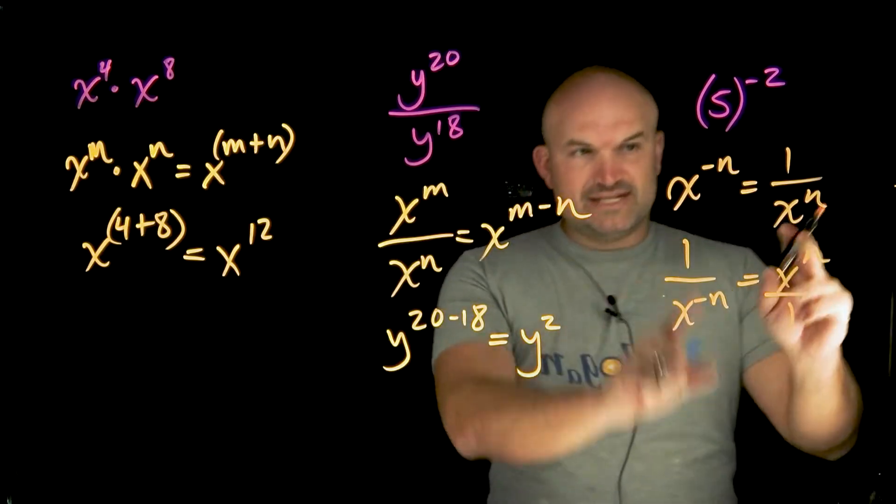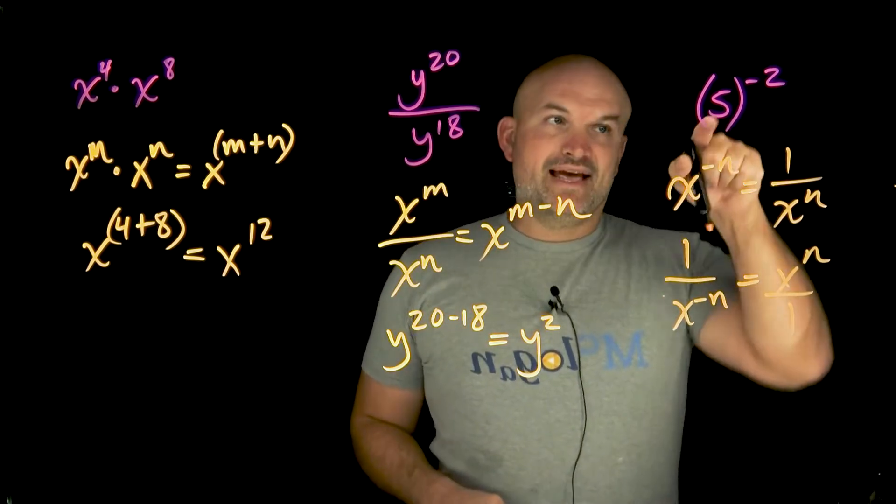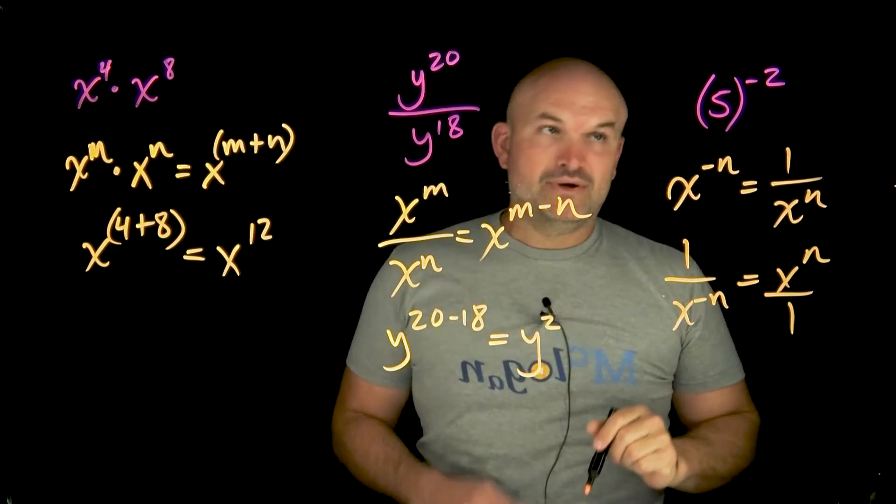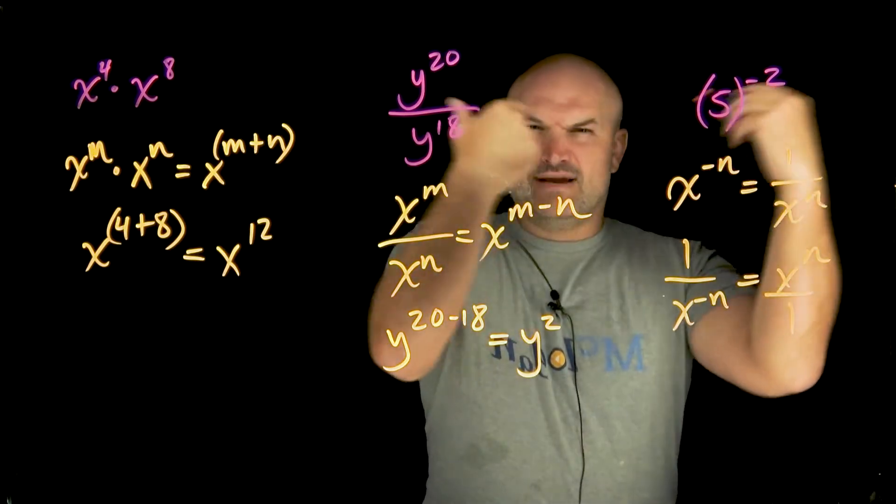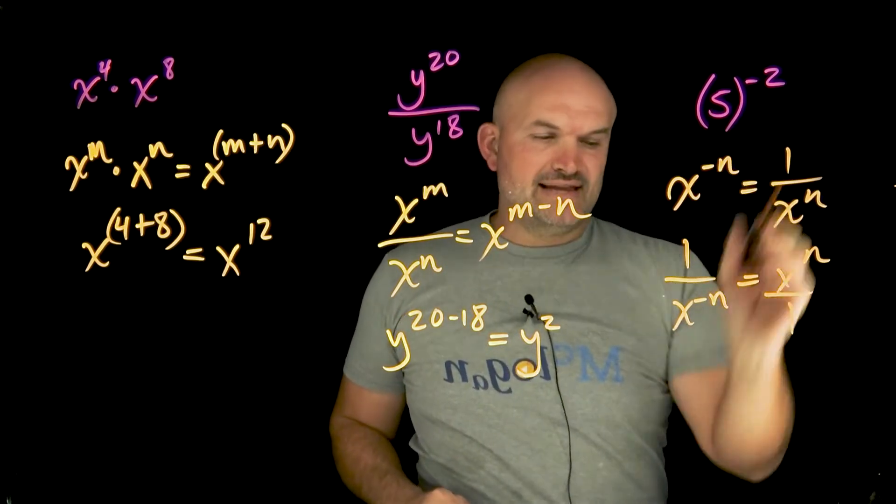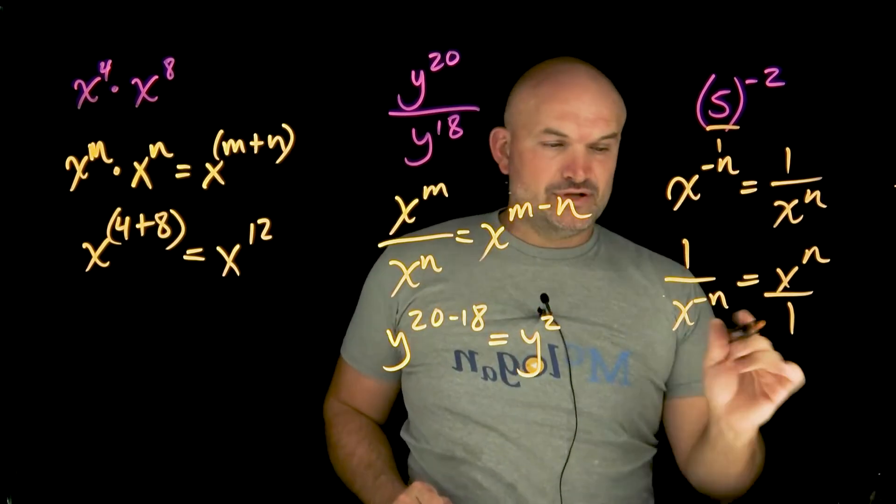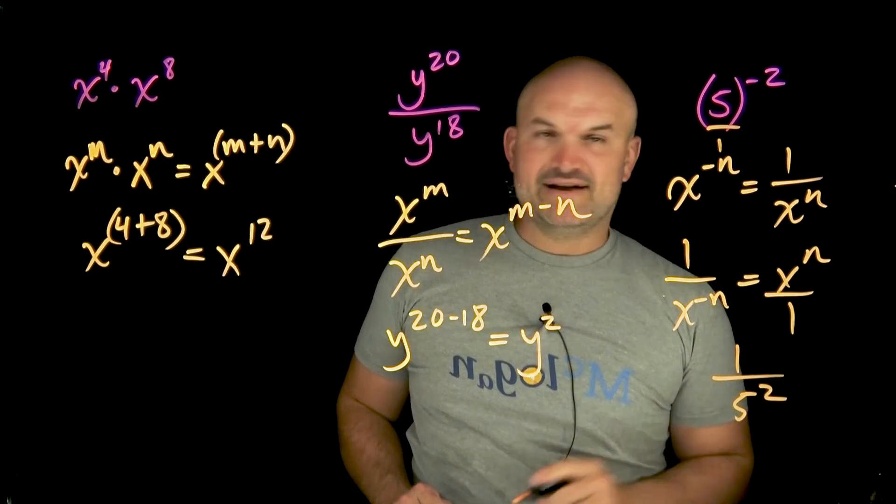If you reciprocate it, you change the sign of the power. If I want this to be a positive two, I simply need to understand where it is initially. You can see this is initially in the numerator, so if I want that to be a positive two, I need to reciprocate it to one over five squared.